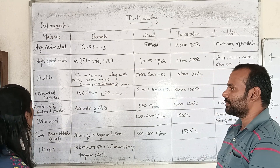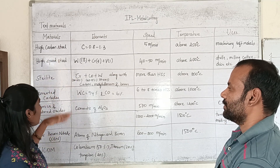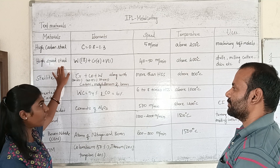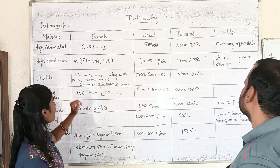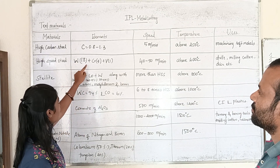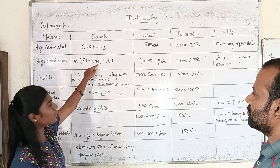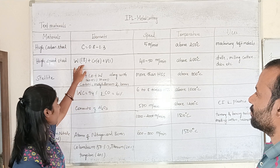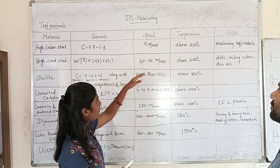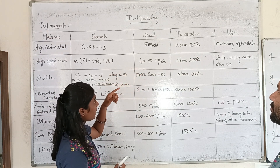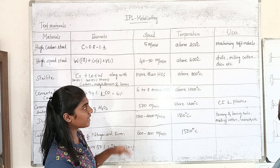Next is high-speed steel. High-speed steel is important for tough conditions compared to other tools. It contains tungsten, chromium 4%, and vanadium 1%. The speed is higher and the temperature is above 600 degrees Celsius.